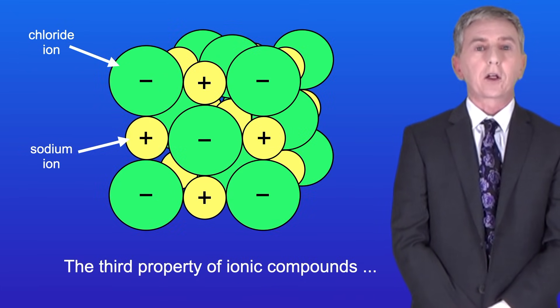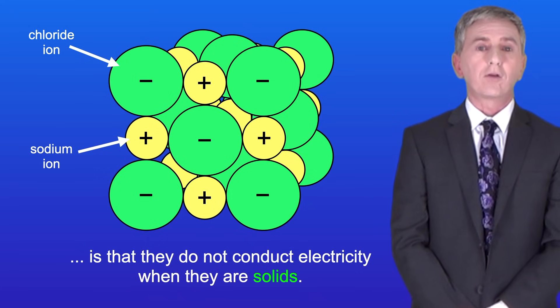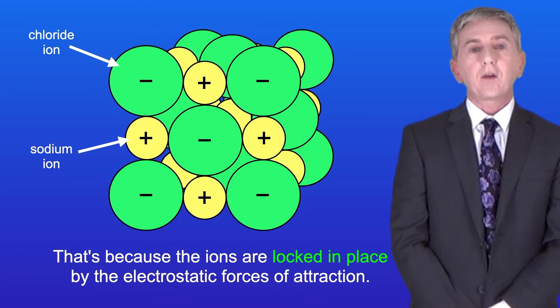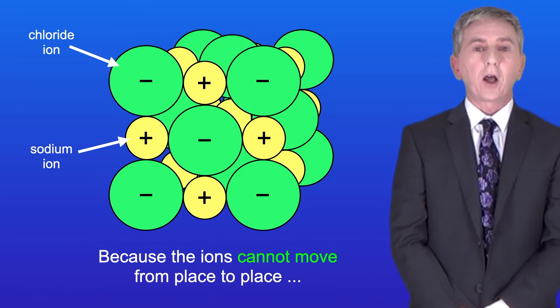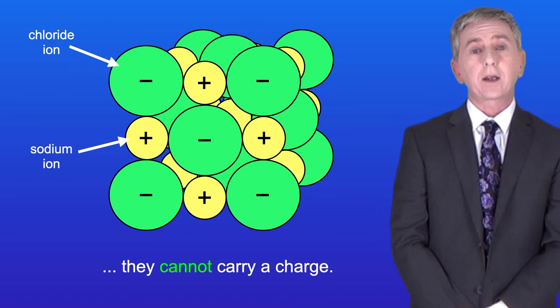The third property of ionic compounds is that they do not conduct electricity when they're solids and that's because the ions are locked in place by the electrostatic forces of attraction. Because the ions cannot move from place to place, they cannot carry a charge.